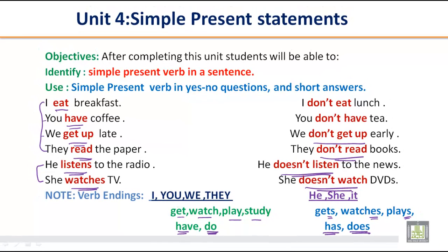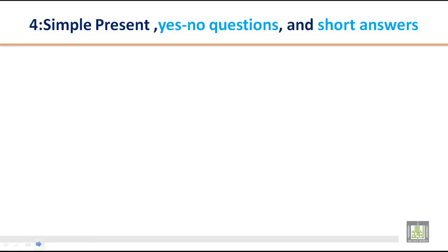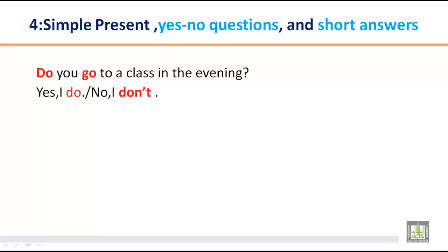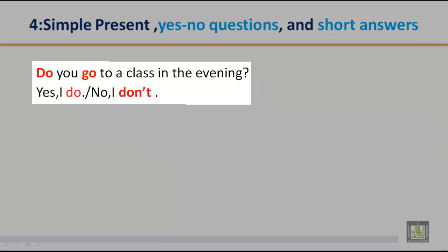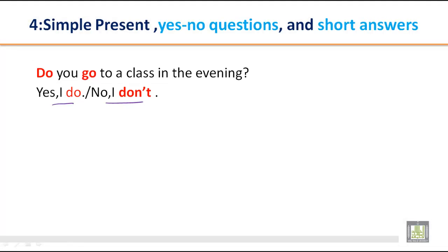Let's do some more practice about yes/no questions. As I mentioned, 'do' is used with I, you, we, and they. For example: 'Do you go to a class in the evening?' — 'Yes, I do.' / 'No, I don't.'